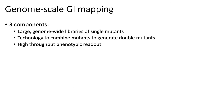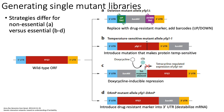In terms of experimentally generating genetic interaction maps, there are three components. First, you need a procedure for generating single mutant libraries. Second, you need a technology or assay to combine single mutants into double mutants. Third, you need a way of measuring a phenotype in a high-throughput way that doesn't require inspecting each individual double mutant separately. The strategy for generating a single mutant library depends on whether you're knocking out an essential or non-essential gene.